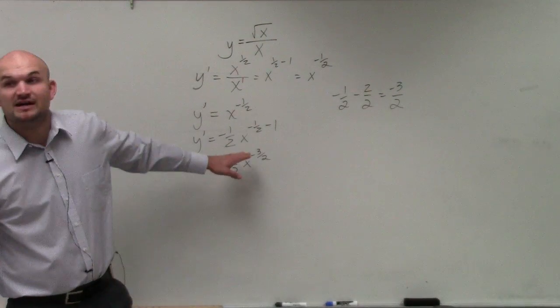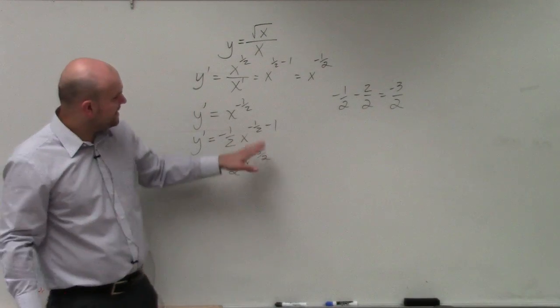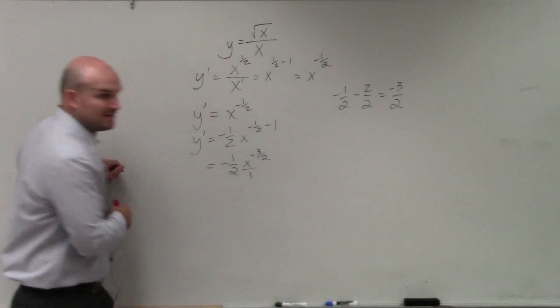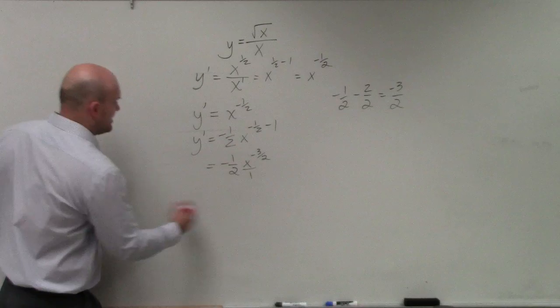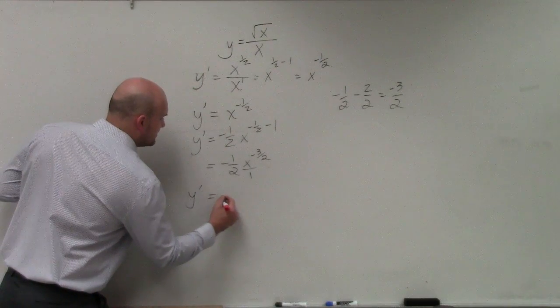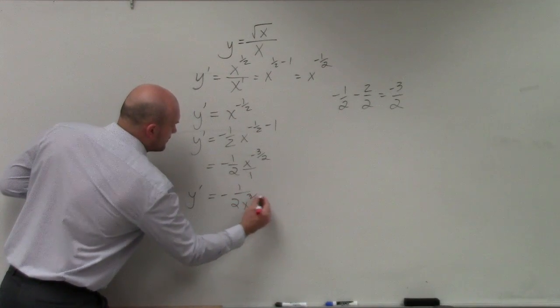However, remember negative exponents, to rewrite as positive. To rewrite negative exponents as positive, we rewrite them in the denominator. So you can think of this right now as being in the numerator. So to rewrite that in a positive, we have a final answer, y prime, as negative 1 over 2x to the 3 halves.